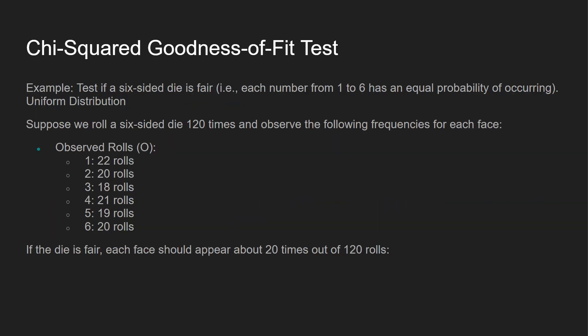Here's our example: we take a look at a six-sided die and determine if it's fair. It's a uniform distribution because the probability of landing on any side of a fair die is exactly the same. If you roll the dice 120 times, you should get around 20 for each side. Our observed rolls for sides one through six are 22, 20, 18, 21, 19, and 20 — all fairly close to 20. Let's see if our chi-squared goodness of fit test works out here.